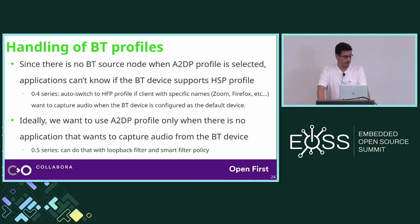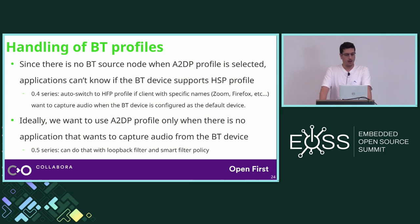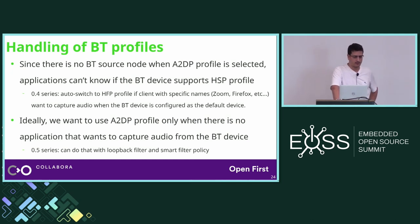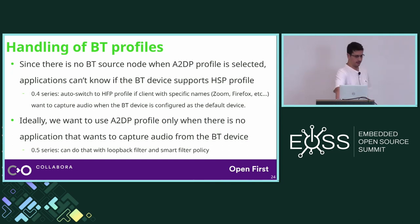The previous 0.4 series had some workaround logic — it would auto-switch to HSP profile if clients had specific names such as Zoom, Firefox, or Chrome, because those are applications meant for video calls. But this caused problems when users connected multiple Bluetooth devices on the same system. Ideally, we want to use only A2DP profile when there is no application that wants to capture audio from the Bluetooth device. The solution is to add a loopback filter for each connected Bluetooth device.